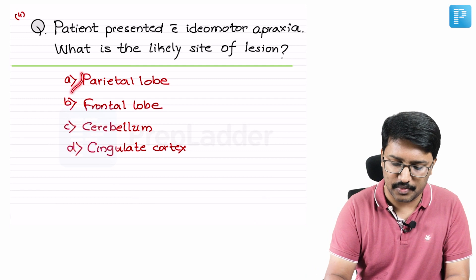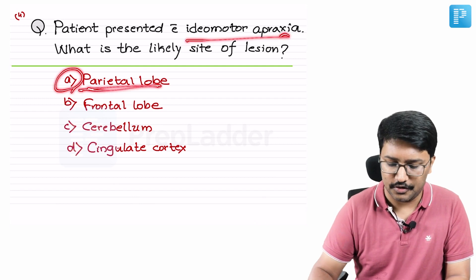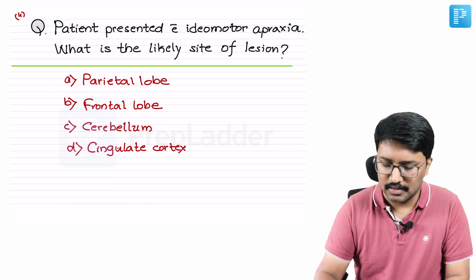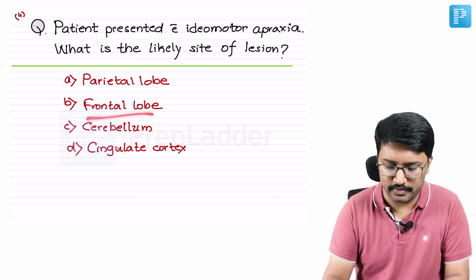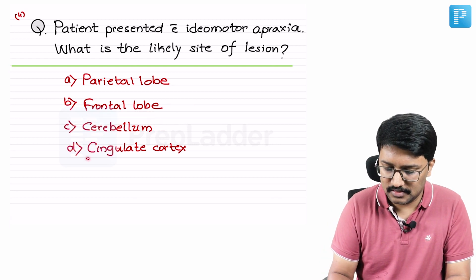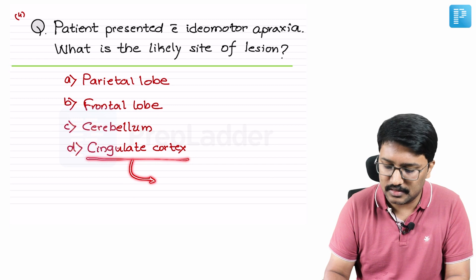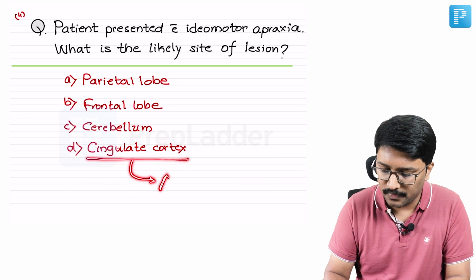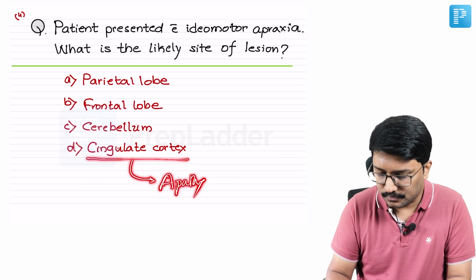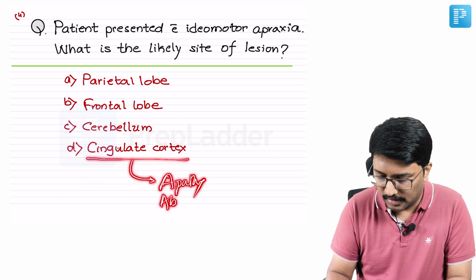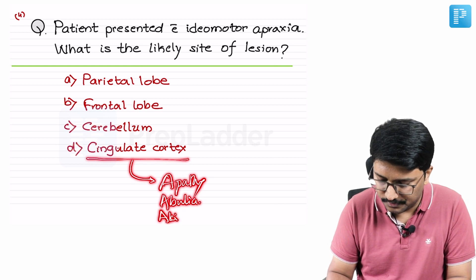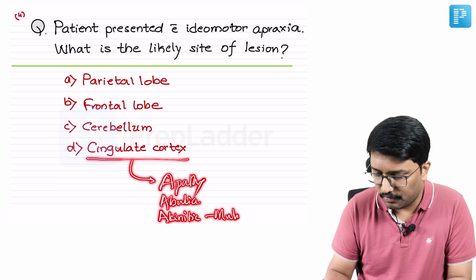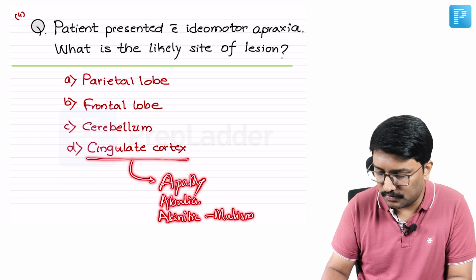To summarize: ideomotor apraxia is caused by a parietal lobe lesion. Cerebellar lesions cause classical cerebellar findings. Frontal lobe lesions were discussed. Cingulate cortex lesion causes apathy, abulia, and akinetic mutism.